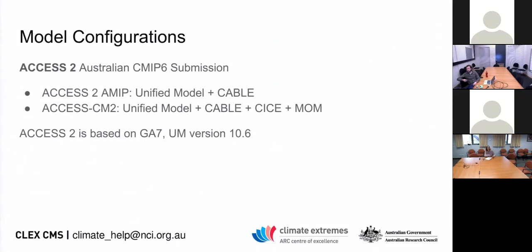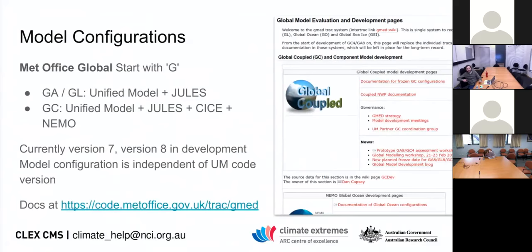The types of configurations we have include the ACCESS CMIP6 submissions. ACCESS 2 is the version of the model run by Rose and Cylc with this Met Office code server setup. This isn't finalised yet, so you won't be able to exactly match what CSIRO is going to submit to CMIP6, but you can run similar models. ACCESS 2 is based on a model configuration called GA7 from the Met Office, which stands for Global Atmosphere Version 7.